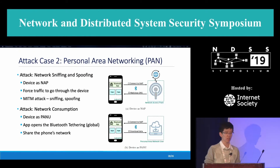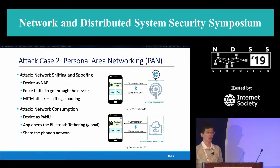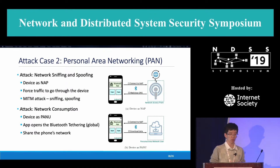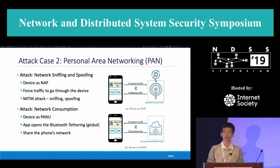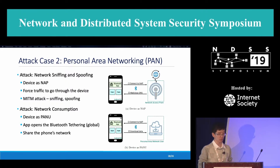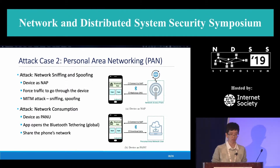The second attack case: if we configure the device using the Personal Area Networking (PAN) profile, we can maintain our device as a network access point and force all traffic to go through our device. We can then easily launch a man-in-the-middle attack which could sniff all the traffic and spoof the traffic with malicious content. As a bonus, we can also force the device to consume the victim phone's network resources under this profile.